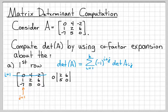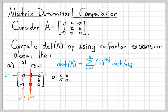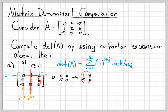The next term has j equal to 2. Now 1 plus 2 equals 3, so we get a negative sign. The entry at the intersection of the first row and second column is 4, giving minus 4 times the submatrix A sub 1,2 — the matrix that remains when I remove the first row and second column.